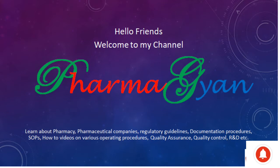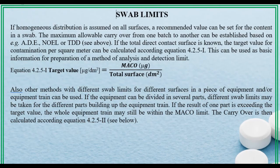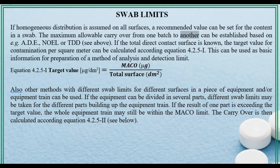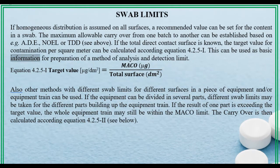Next we will discuss about swab limits. If homogeneous distribution is assumed on all surfaces, a recommended value can be set for the content in a swab. The maximum allowable carryover from one batch to another can be established based on, for example, ADE, NOEL, or TDD. If the total direct contact surface is known, the target value for contamination per square meter can be calculated according to Equation 4.2.5i. This can be used as basic information for preparation of a method of analysis and detection limit. Equation 4.2.5i: target value (g/dm²) equals...